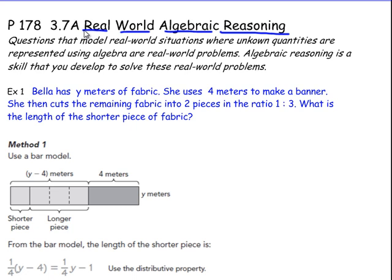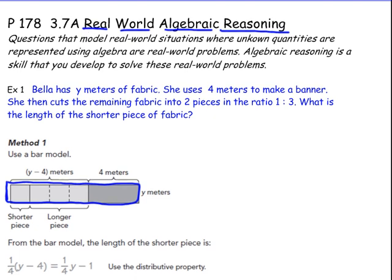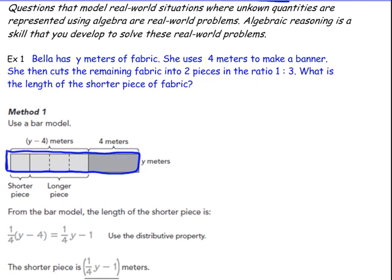Bella has Y meters of fabric. So altogether she's got Y meters of fabric. And I can see there's a bar model drawn here. So that's talking about this big rectangle. That's the Y meters of fabric. She uses 4 meters to make a banner. So she's cutting away 4 meters of it. So that's this part here.